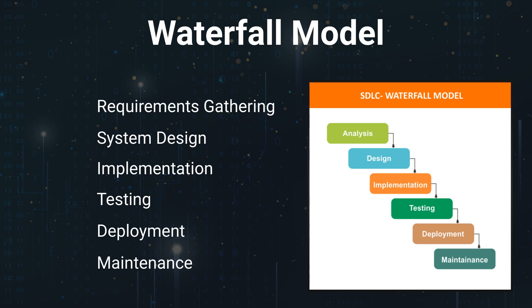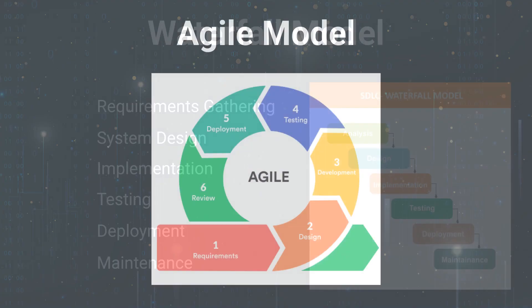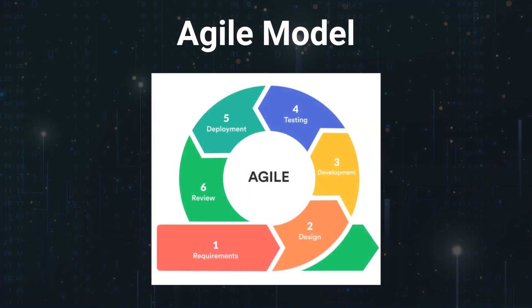Overall, the waterfall model is best suited for projects with well-understood and stable requirements, such as simple software applications with minimal anticipated changes. However, in dynamic and rapidly evolving environments where requirements are likely to change or are not fully understood initially, more flexible and adaptive approaches like Agile are often preferred. The Agile model is an iterative and flexible approach to software development that prioritizes collaboration, customer feedback, and adaptability. It emphasizes breaking the development process into smaller, manageable cycles called sprints or iterations, which typically last a few weeks. Agile stands in contrast to traditional linear models like waterfall — instead of detailed upfront planning, Agile allows for evolving project requirements and continuous improvement.